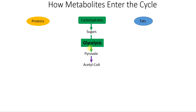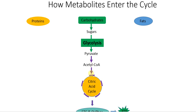The products of glycolysis are pyruvate, which is quickly changed into acetyl-CoA. And acetyl-CoA is what will actually enter the citric acid cycle, and then we continue on the path to eventually get ATP. So that's how sugars will enter the cycle — via pyruvate and eventually acetyl-CoA.